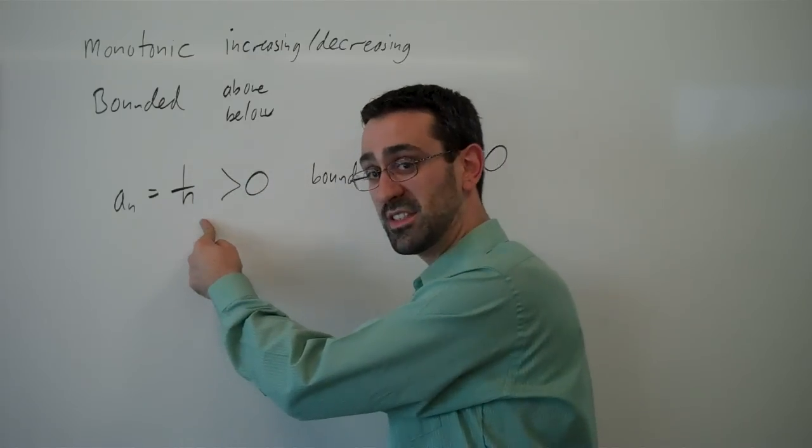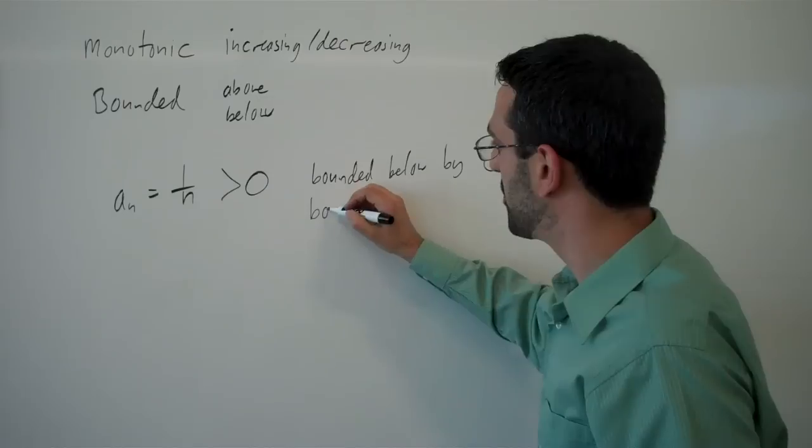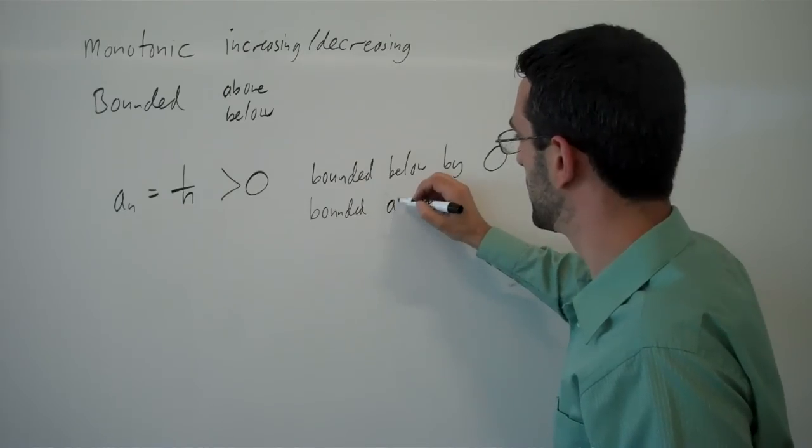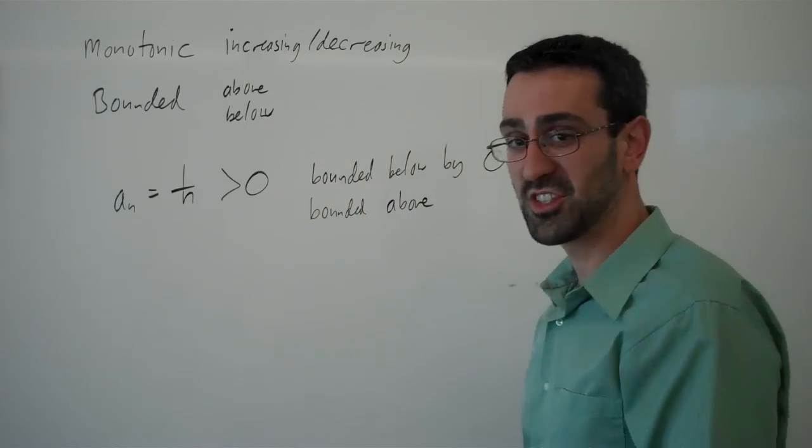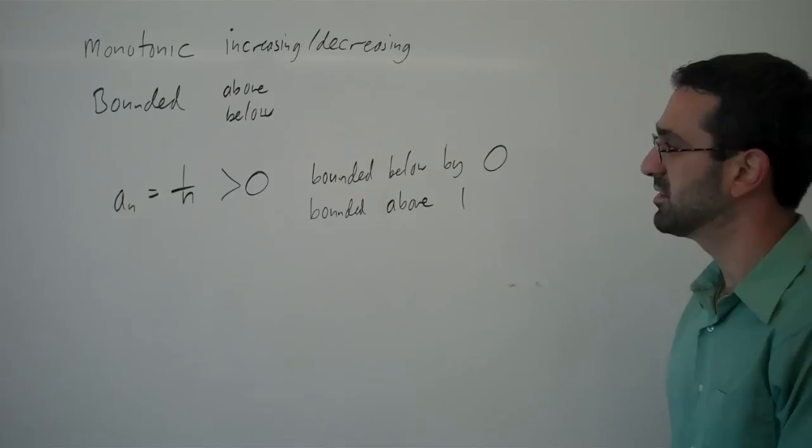Now, we also know that this is decreasing, which means it's always getting smaller. So it's also bounded above by whatever the starting value is. In this case, it's 1.